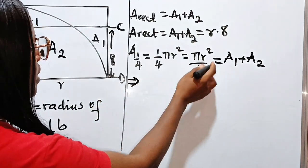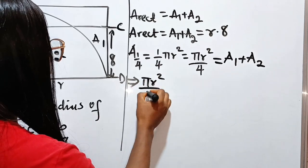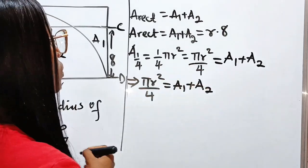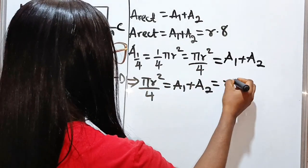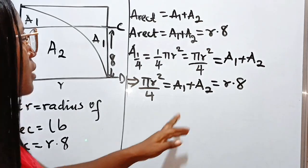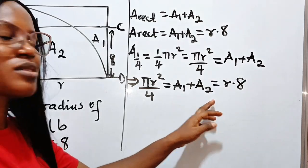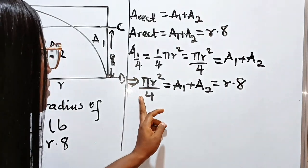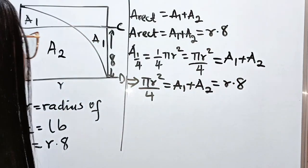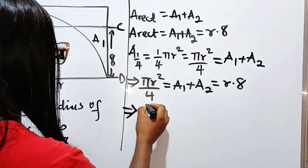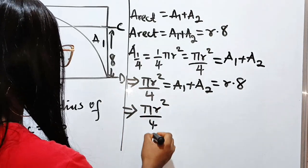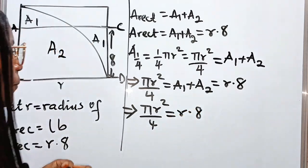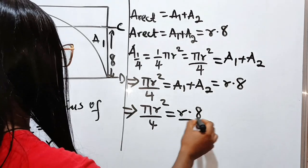Therefore, we can say that pi r squared divided by 4 is equal to A1 plus A2, which is equal to r multiplied by 8. Now, A1 plus A2, we don't have any value for that. So using it to actually solve this is going to stress us. So let's equate this to that. So this implies that pi r squared over 4 is equal to r multiplied by 8.